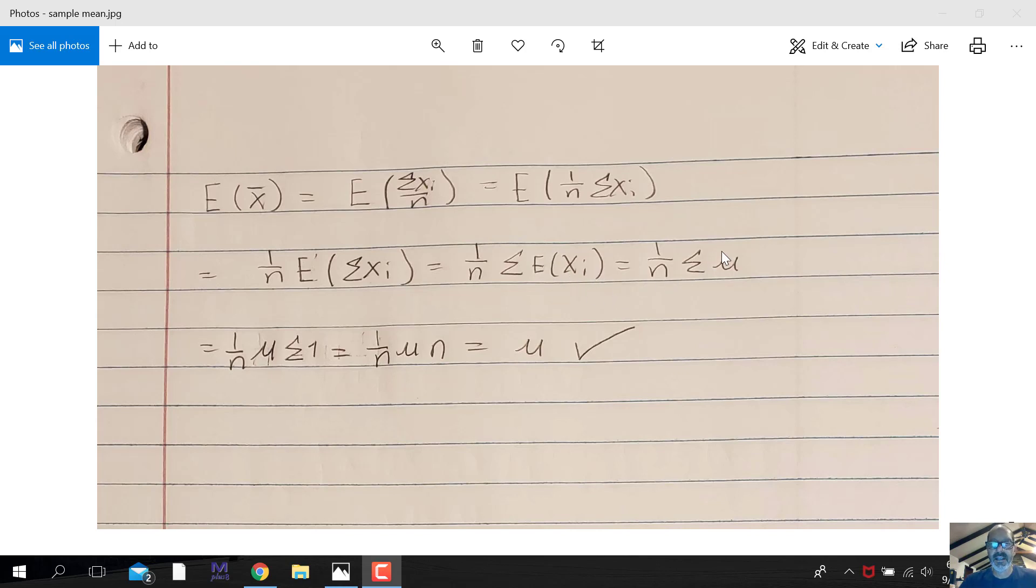Well, the expected value of xi is mu, the mean. So this is a constant. We can rewrite this as mu times the summation of the value 1, n times. We're doing that n times. So we have n times mu here times 1 over n, and the n's cancel each other out, and we get mu.